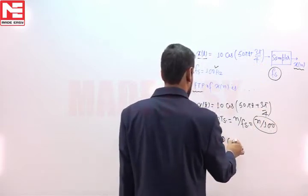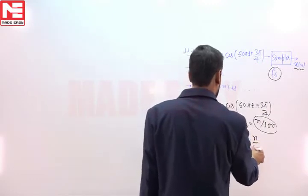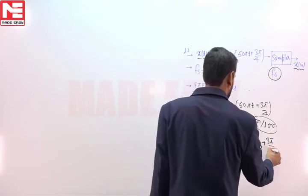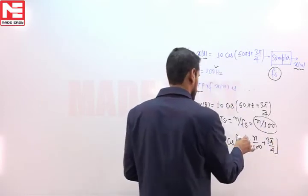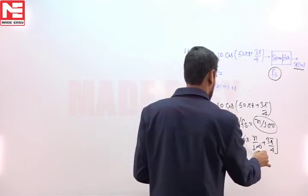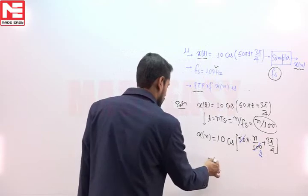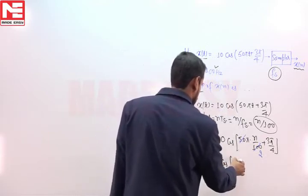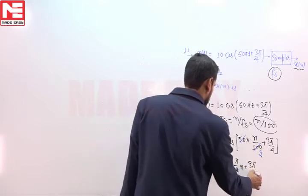We will write it down in this way: 10·cos(50π·n/100 + 3π/4). These two terms will cancel out, and x(n) will be like this: 10·cos(πn/2 + 3π/4).